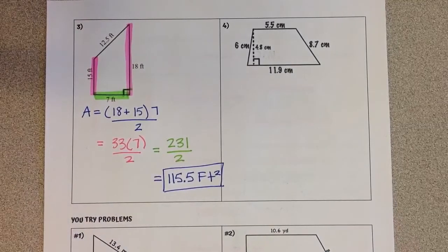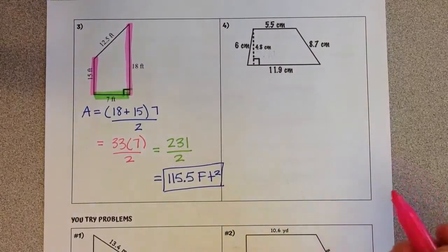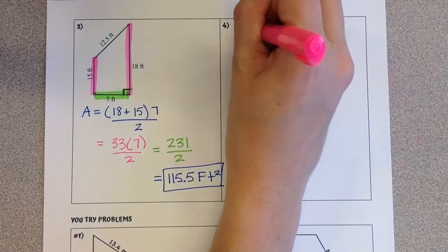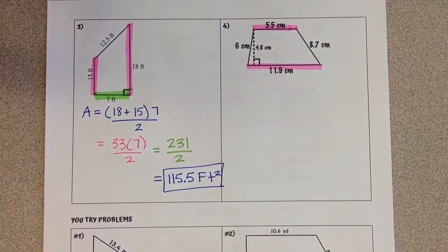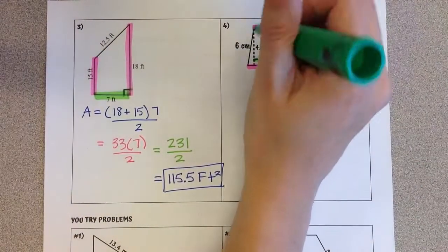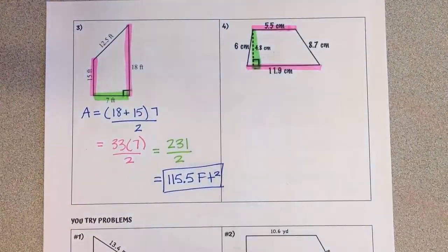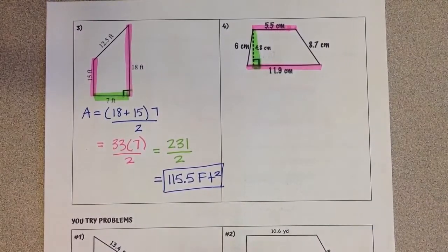All right, one more before we move on to the you try. Again, looking for our parallel sides. In this case, it's the top and the bottom that will never intersect. Looking for the perpendicular height, I see the 90 degree measure right here, which has a dotted line to it, connecting those bases. Let's plug into the formula.